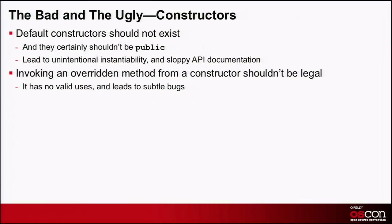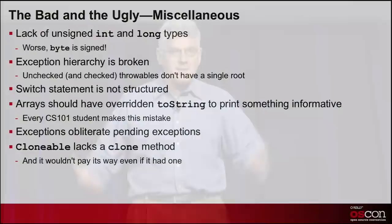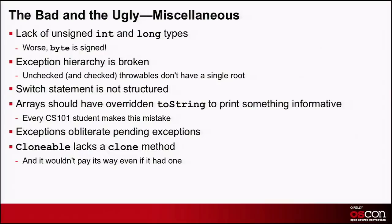What about constructors? Default constructors are bad. You forget about constructors and the compiler in its infinite wisdom gives you a public constructor — but what if it's a static utility class, or you didn't want anybody to construct an instance? Also, invoking overridden methods from constructors should be illegal because it's always wrong. And lack of unsigned int and long was a big mistake. Worse, bytes are signed — when doing byte manipulation for network packets or graphics, sign extension always gets in the way and that code is buggy and error-prone.